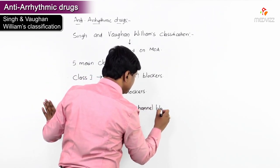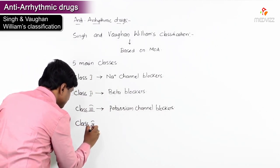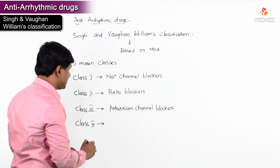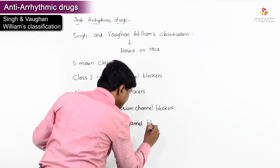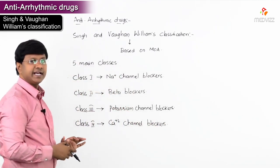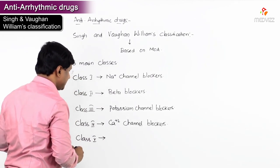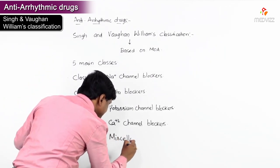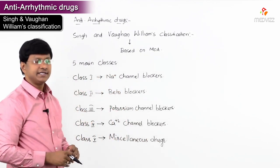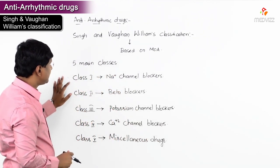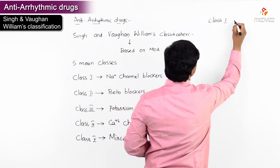Class 4 anti-arrhythmic drugs are calcium channel blockers. Class 5 anti-arrhythmic drugs are miscellaneous drugs. Now let me discuss about the Class 1 agents.